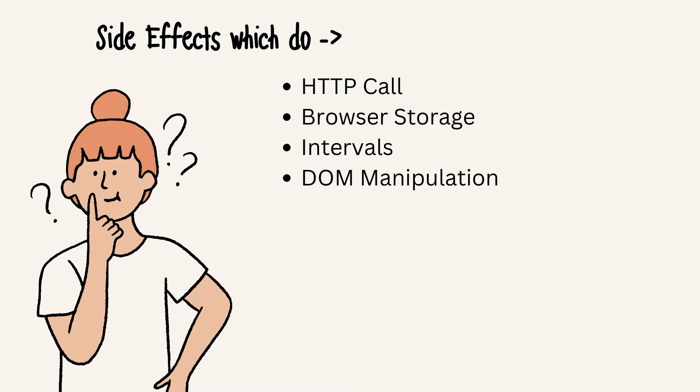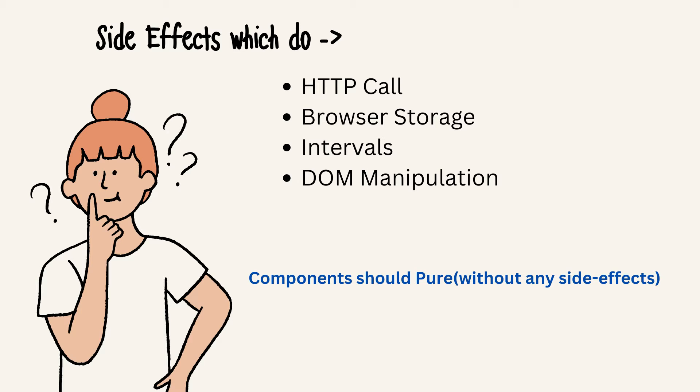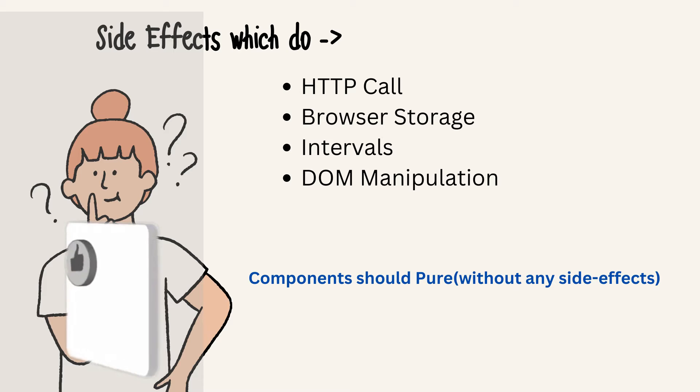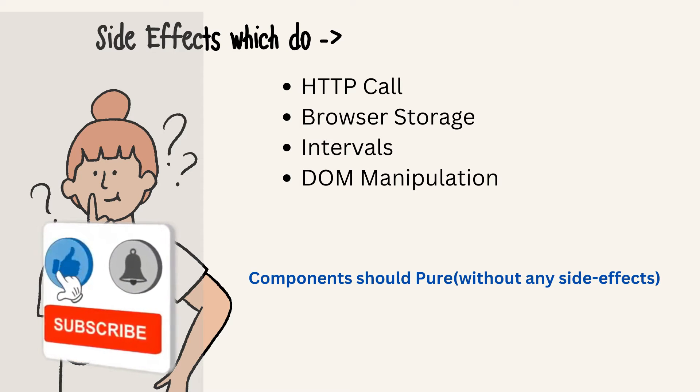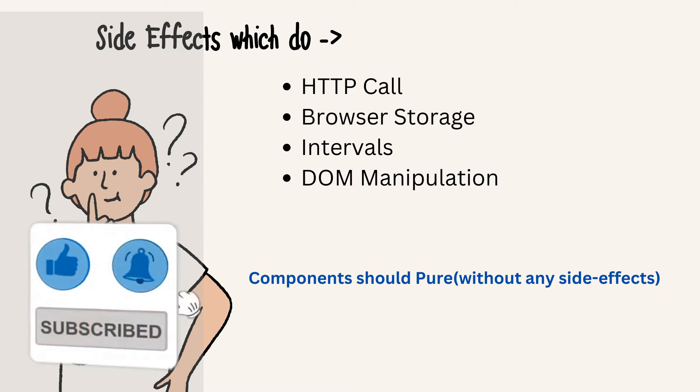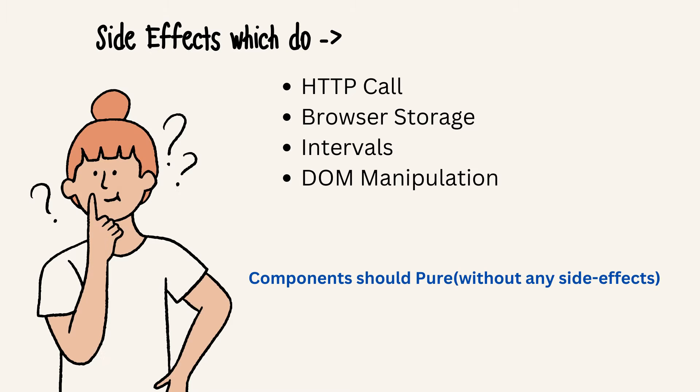React assumes that your component should be pure. Pure components means they should be without any side effects. What are pure functions, impure functions, and side effects? Those things you can understand in a separate video — I will provide the link in the description. So we should try to create components as pure components without any side effects, and to implement side effects, we should not do it in the straightforward way we handle normal functions.